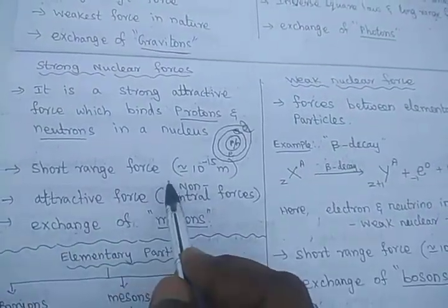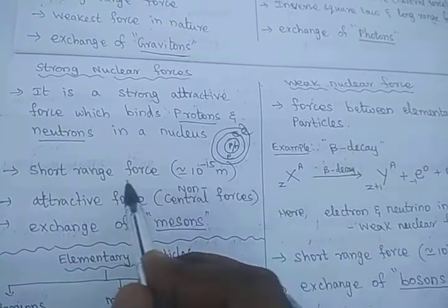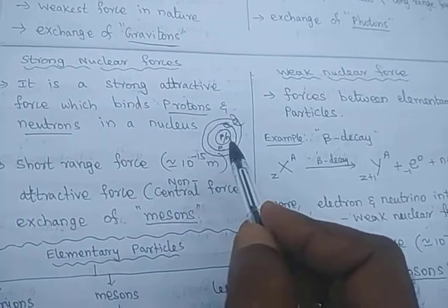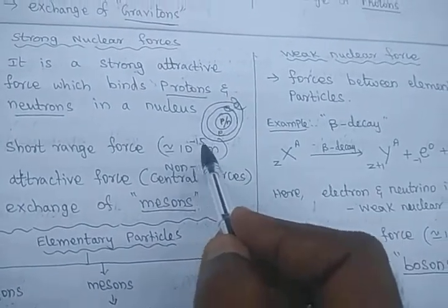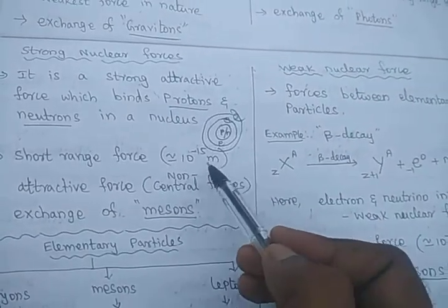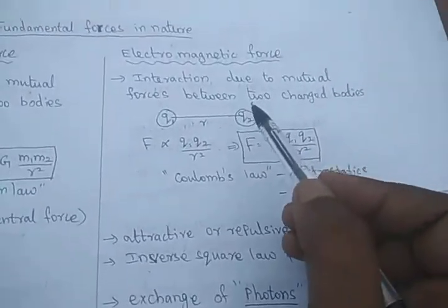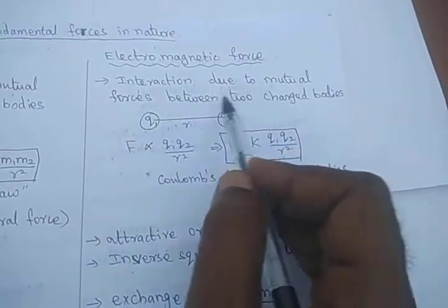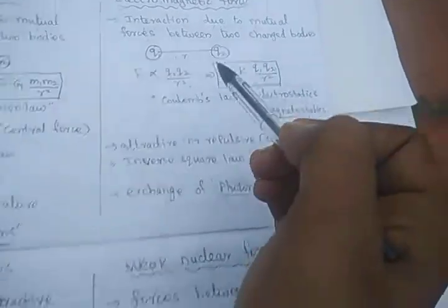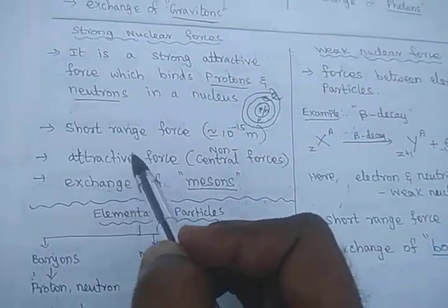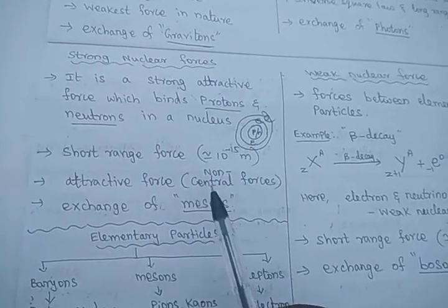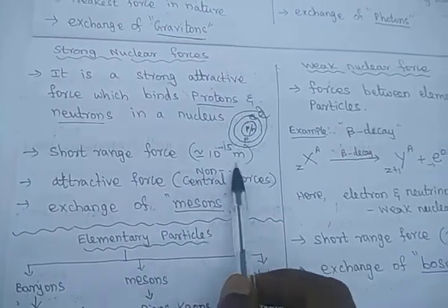The strong nuclear force is a very short-range force. This force is applicable only when the distance between two protons is less than 10 to the power of minus 15 meters. If the distance between two protons is greater than this, then electromagnetic or electrostatic forces — Coulomb's law — come into effect. The strong nuclear force is an attractive force only, not a repulsive force. It is also a non-central force.